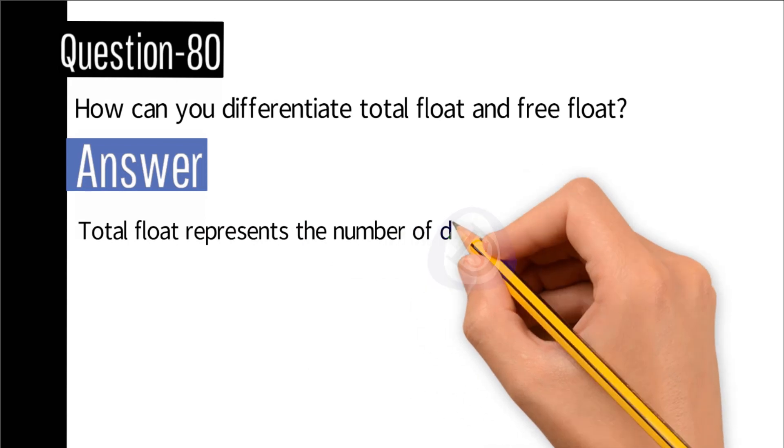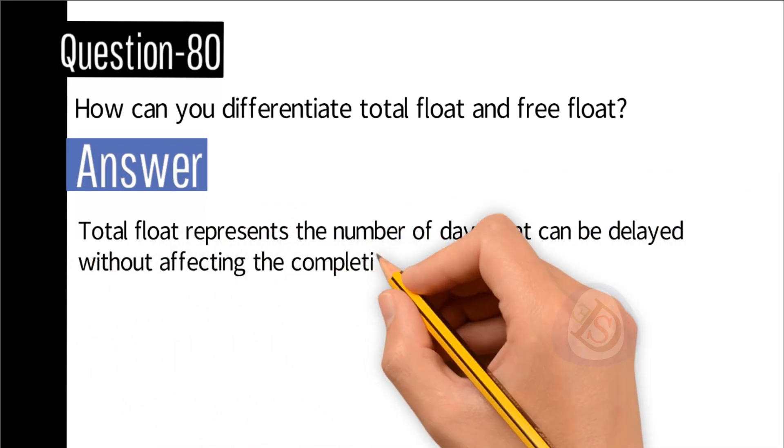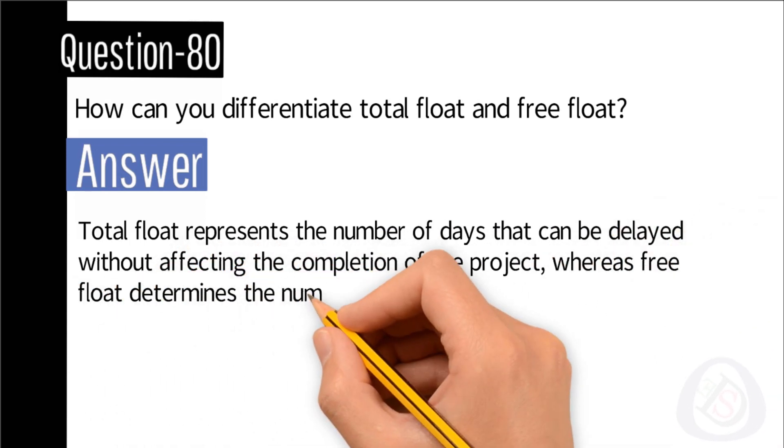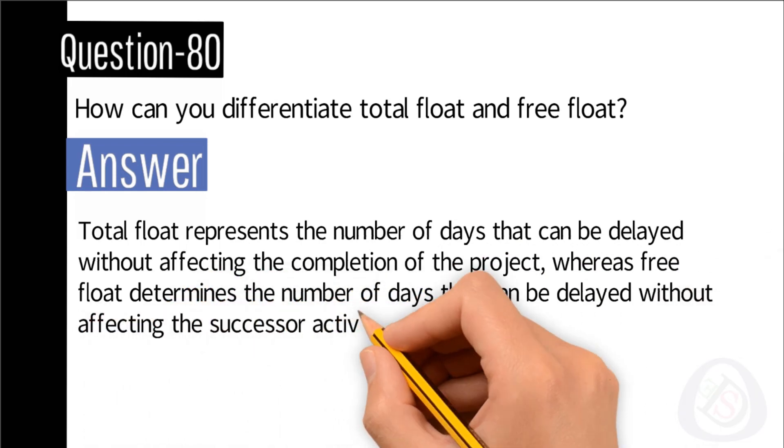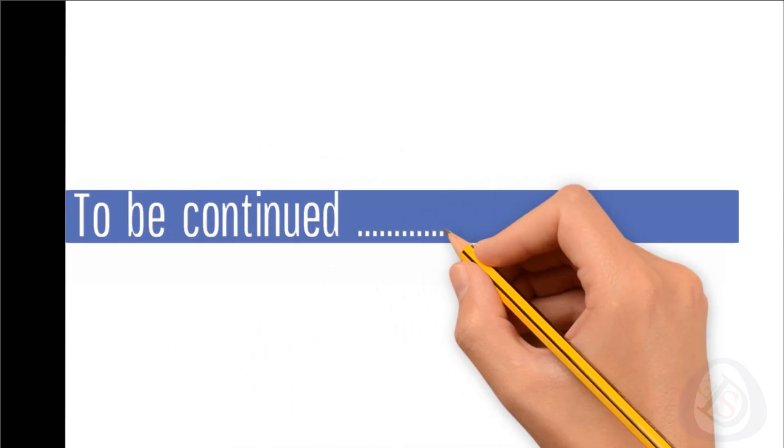Question number 80: How can you differentiate total float and free float? Answer: Total float represents the number of days that can be delayed without affecting the completion of the project, whereas free float determines the number of days that can be delayed without affecting the successor activities.